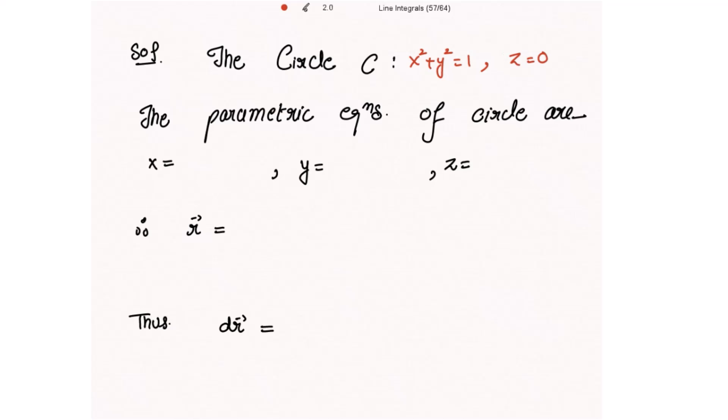What are the parametric equations of the circle? The parametric equations are x = cos(t), y = sin(t), and z = 0.